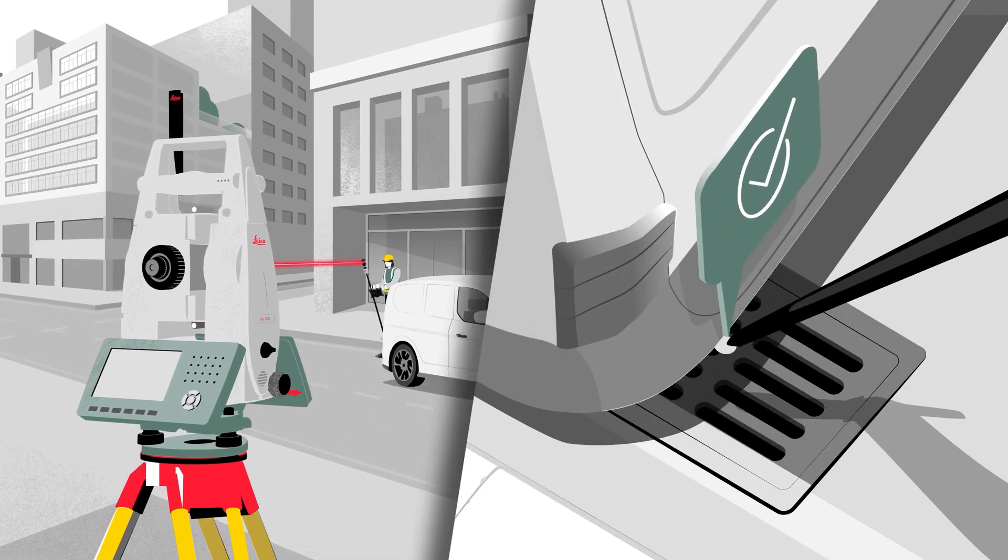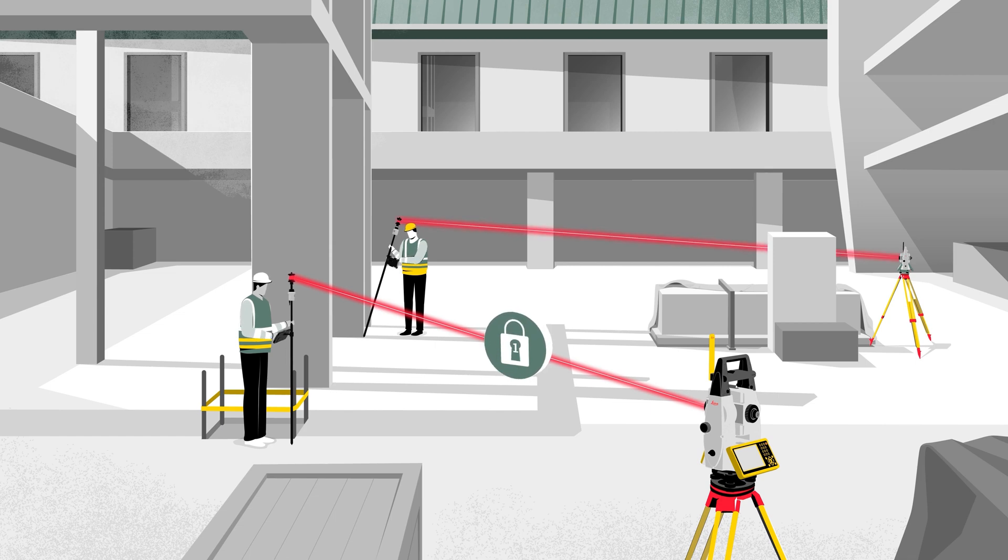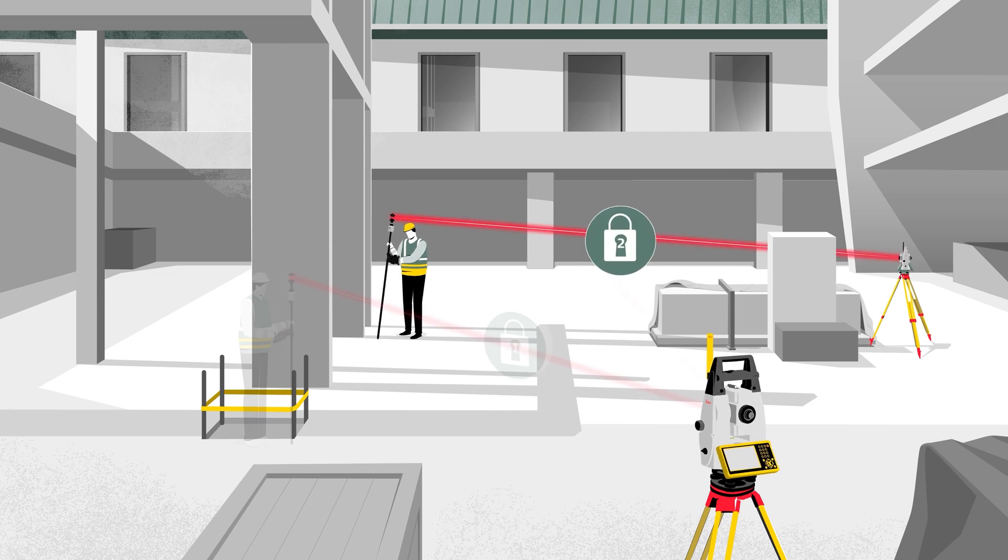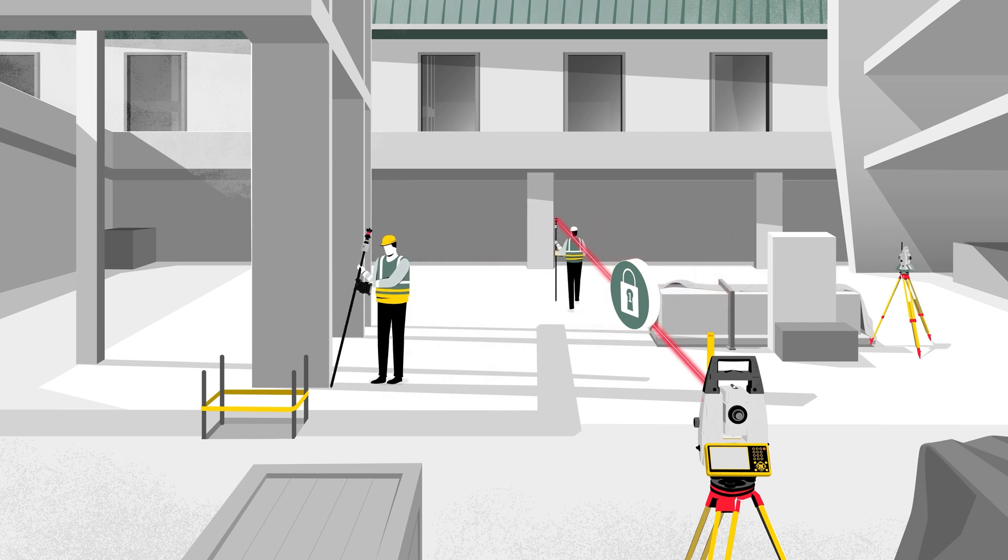When working on busy construction sites with several field crews and multiple instruments, it is crucial that your total station remains focused on the most important thing: your target. The target ID functionality, which provides automatic target search and identification, ensures that the total station finds your target as quickly as possible, even under the most challenging site conditions.